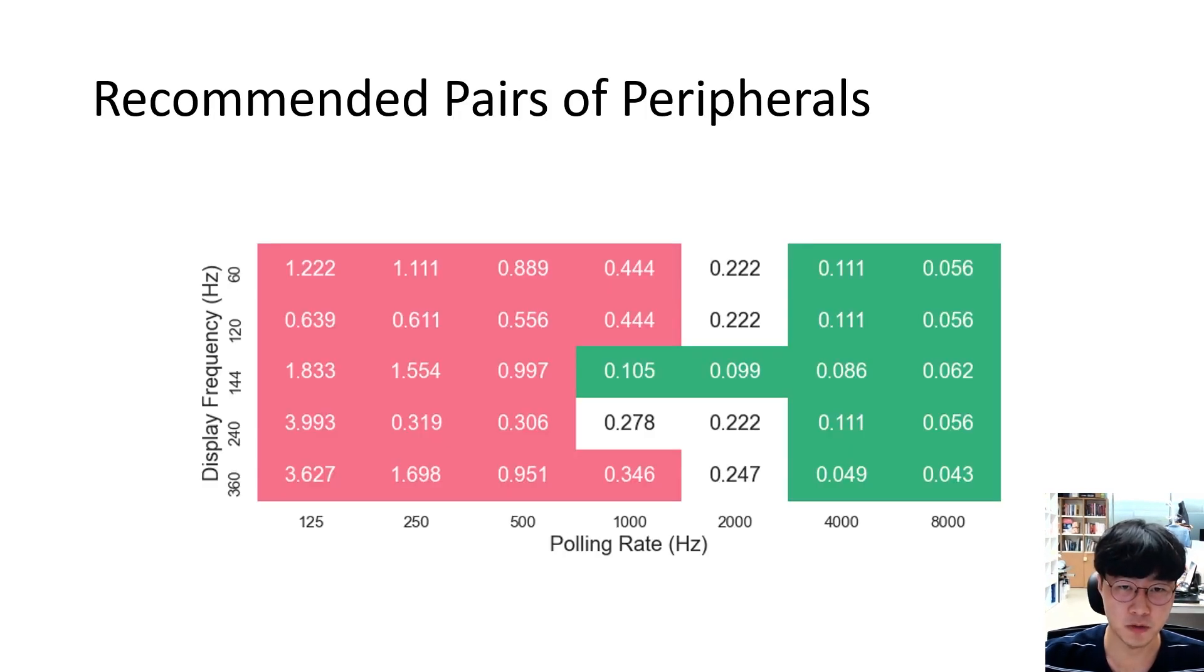From our experimental results, we tabulated a set of good and bad display and mouse combinations. Mouse polling rates less than or equal to 500 Hz introduce noticeable jitters at all display frequencies, whereas polling rates more than 2000 Hz are clearly good. Interestingly, while using a mouse with a polling rate of 1000 Hz, the de facto standard limit of a USB mouse, a higher frame rate display may introduce more jitter than the lower one.